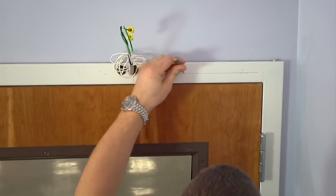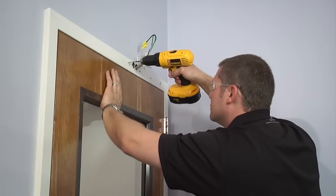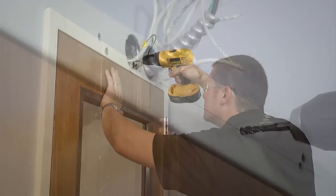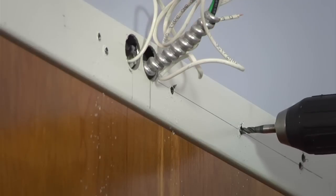Punch the hole locations, drill with the number seven bit, then thread the holes with a one quarter twenty thread tap.